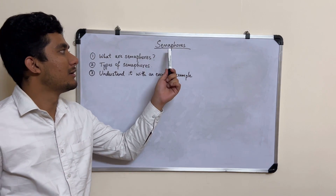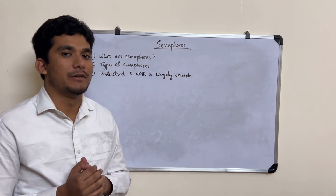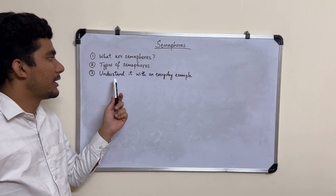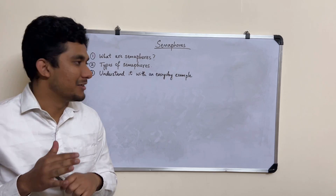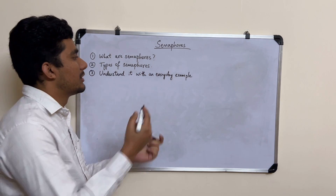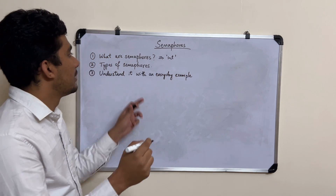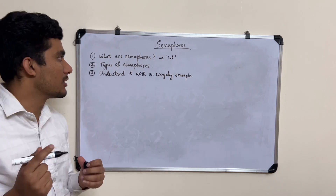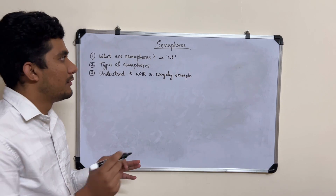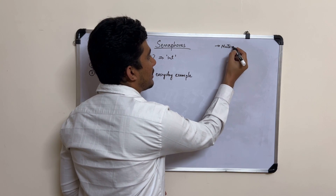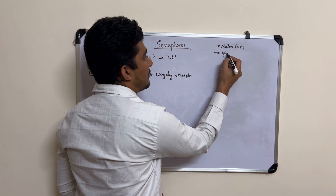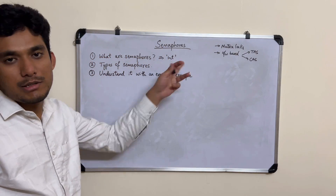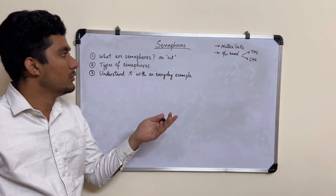Hello everyone, welcome back. In this video we'll be talking about semaphores. In the previous video I gave a brief introduction; here we'll see what semaphores are in more detail, talk about the types of semaphores, and try to understand them with an everyday example. Semaphores are software tools available to us so that we can achieve process synchronization.